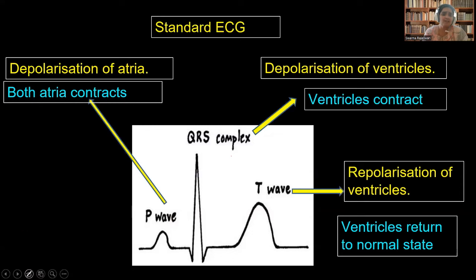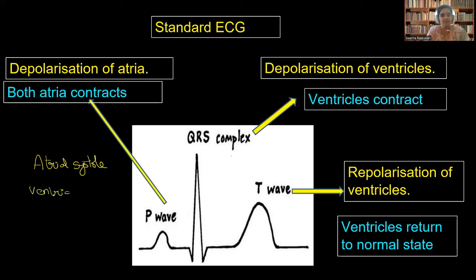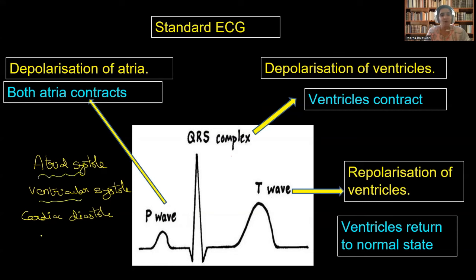We know that the cardiac cycle contains three phases: atrial systole, ventricular systole, and cardiac diastole — where the entire heart goes into a relaxed state. Each phase of our cardiac cycle is represented in the form of a graphical representation which we are calling electrocardiogram.